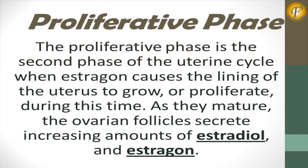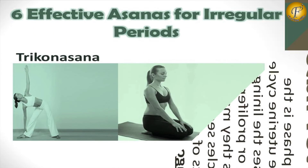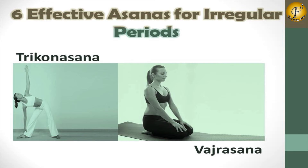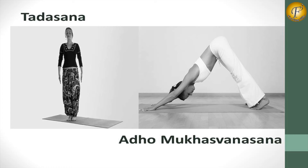The proliferative phase is the second phase of the uterine cycle, when estrogen causes the lining of the uterus to grow or proliferate. During this time, as the ovarian follicles mature, they secrete increasing amounts of estradiol and estrogen.